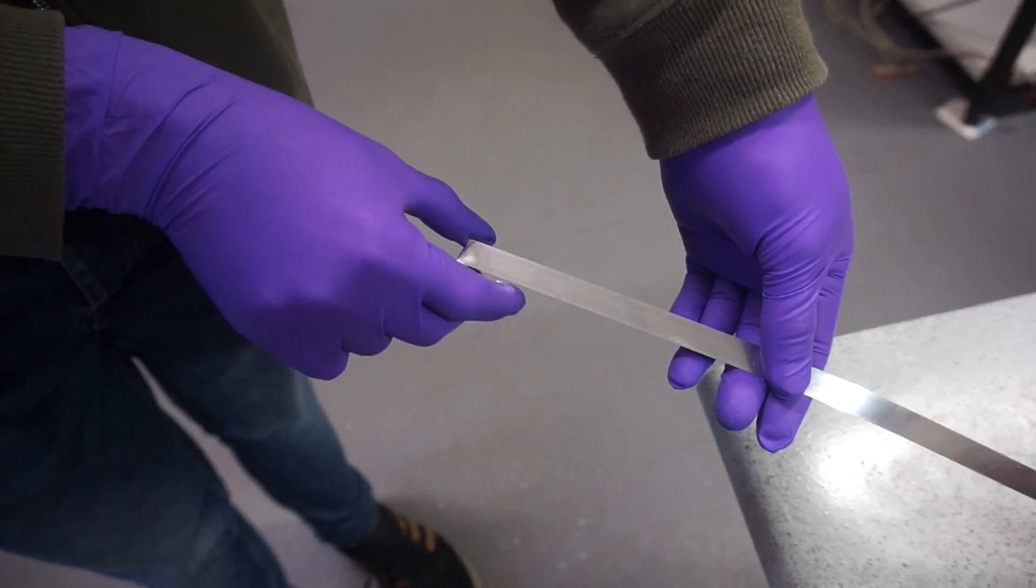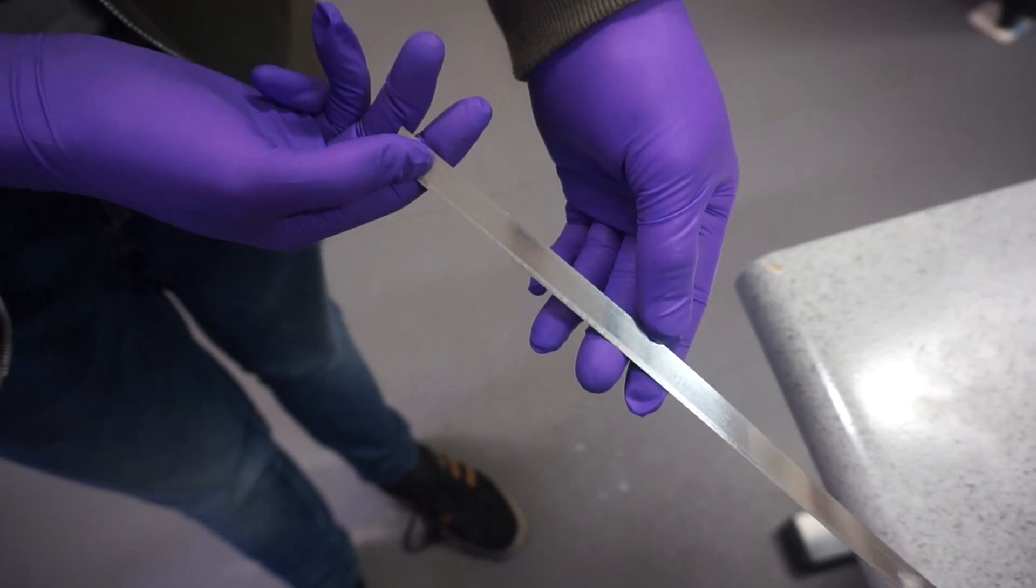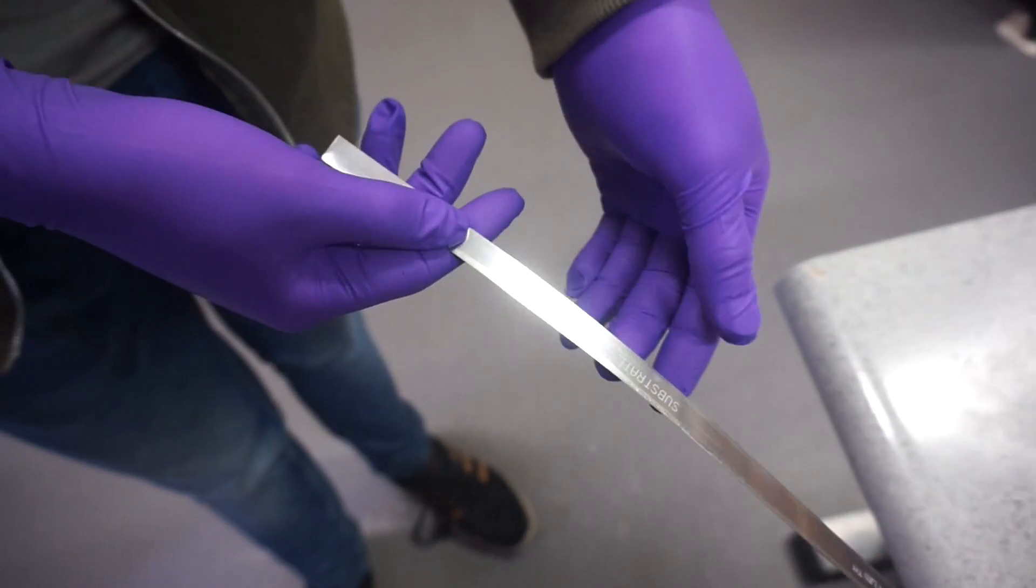Here is a sample of superconducting tape. It has a critical temperature of approximately 92 Kelvin. This means that we can use liquid nitrogen to transition it into the superconducting state.